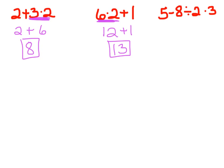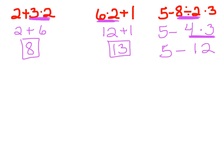In this case, PEMDAS says multiplication and division, but we're going to start with the division and go left to right. So we're going to say 5 minus, and then 8 divided by 2 is 4, times 3. Now we do this multiplication left to right: we have 5 minus 12, and 5 minus 12 is negative 7.